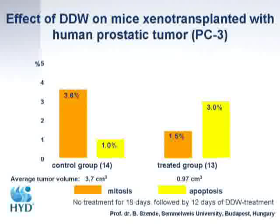In yet another experiment using PC3 prostate cancer, the tumor was transplanted and both groups consumed normal water for the first 18 days. The treated group then consumed deuterium depleted water for 12 days. Analysis showed that in the control group, 3.6% of cells were in mitosis and only 1% in apoptosis, with an average tumor size of 3.7 cubic centimeters. In the treated group, the ratio was reversed — deuterium depletion triggered apoptosis, tumor size was much smaller, and the shape was ball-shaped, suggesting that deuterium depletion can trigger apoptosis.